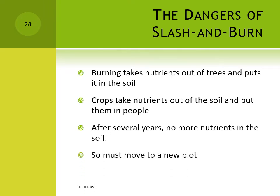In slash-and-burn horticulture, there's no way of replenishing the nutrients in the soil other than more burning. So over a period of a few years the fertility of the plot becomes exhausted. When that happens, the only thing to do is move to a new plot and slash and burn a new garden spot. This is a major investment of energy on the part of the farmers, but it only needs to be done once every few years. Once the old plot has regrown its natural forest cover, it can be re-cleared and burned again, though it may take several decades to return to full productivity.